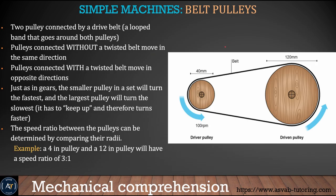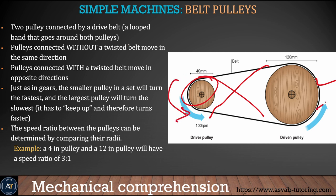A belt pulley is similar to the pulley system — it consists of two pulleys connected by a drive belt. If the pulleys are connected without a twist, the belt moves in the same direction for both pulleys. If connected with a twist, they rotate in opposite directions.